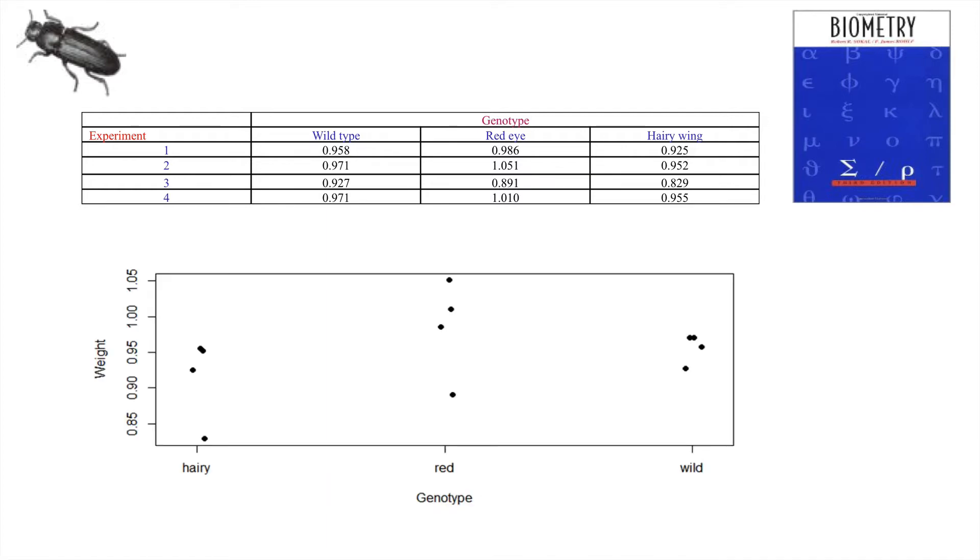Of course we can plot these graphs out and the data appear as if the red genotype does seem to have a higher weight certainly than the hairy genotype. But how can we analyse these data?